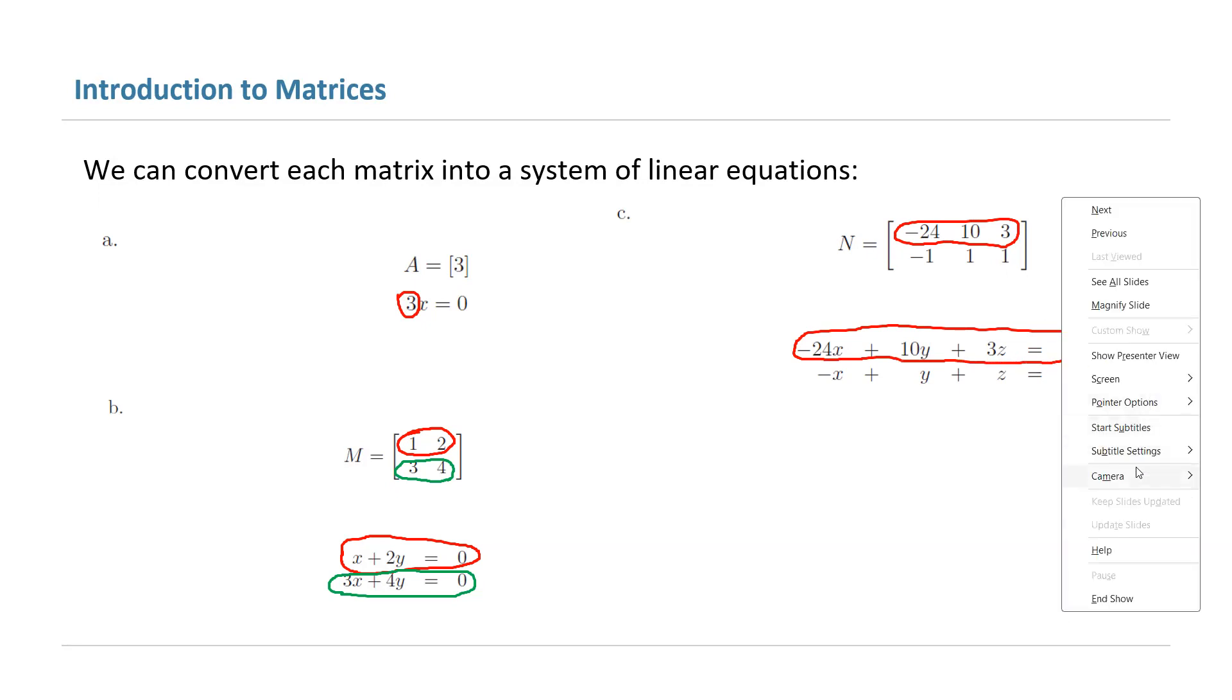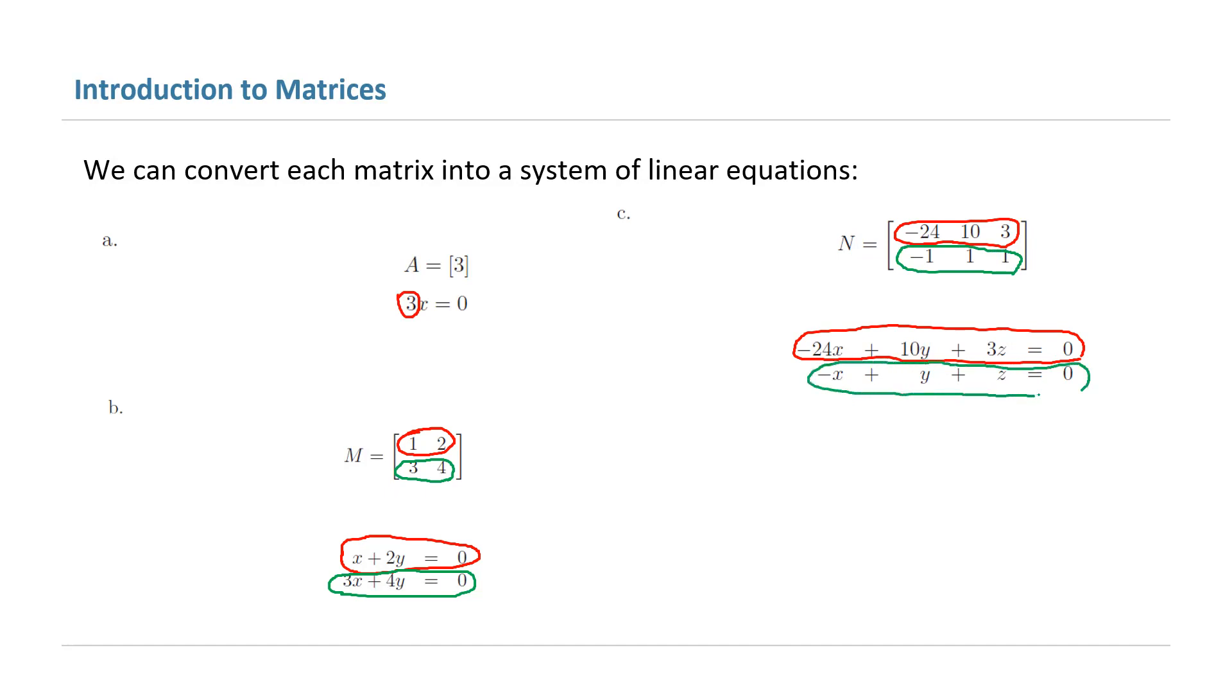You have negative 1, 1, and 1 - the entries on the second row, which convert into a linear equation: negative x plus y plus z equal to 0.